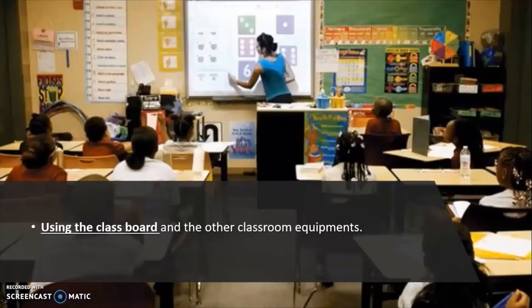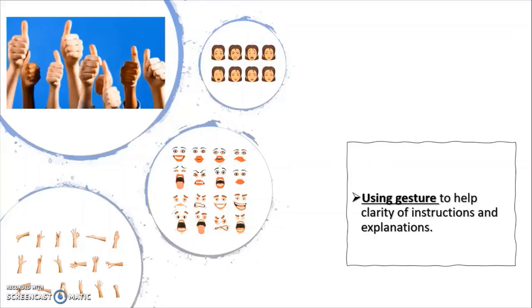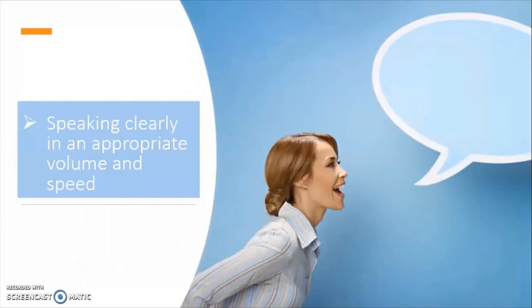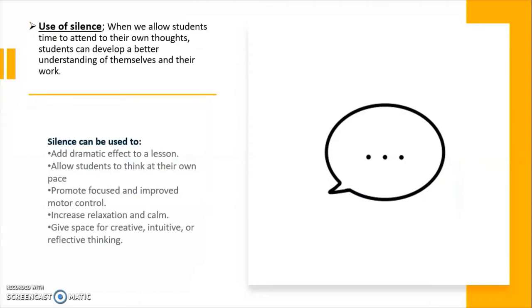Tools and techniques: using the class board and other classroom equipment; using gestures to help clarity of instructions and explanations; speaking clearly at an appropriate volume. To quieten chatter in class, resist raising your voice, which only works to encourage more noise. Help students familiarize themselves with your non-verbal ways for quieting down the class, which include hand signals, counting down backward from five until silence is achieved, or clapping. Use of silence: when we allow students time to attend to their own thoughts, students can develop a better understanding of themselves and their work. Silence can be used to add dramatic effect to a lesson, allow students to think at their own pace, promote focus, and improve motor control. Increased relaxation and calm gives space for creative, intuitive, or reflective thinking.